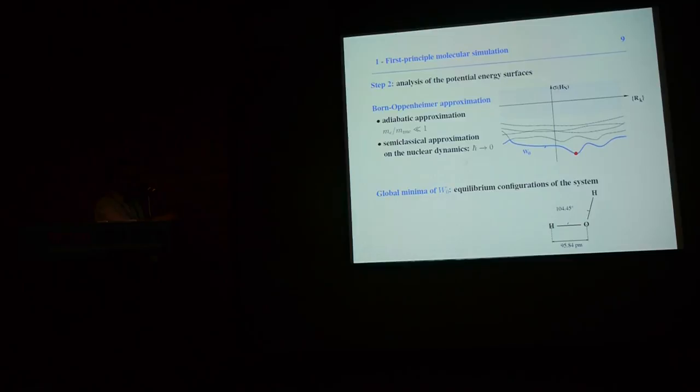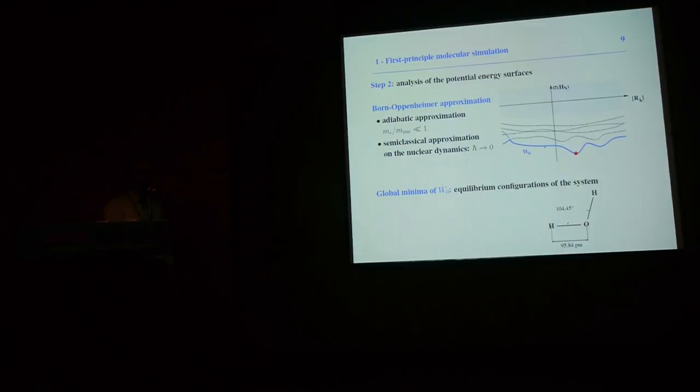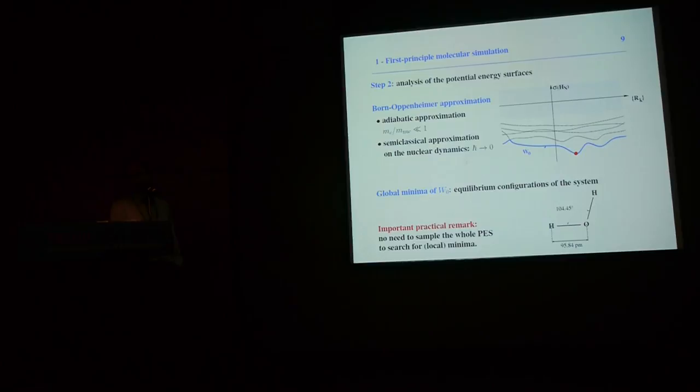In practice, we do not scan the entire surface, because for a large system this surface is a function of dimension 3M, where M is the number of nuclei. For a large system, there is no convenient way to sample this surface. So we use local or global optimization algorithms to locate the global minimum.